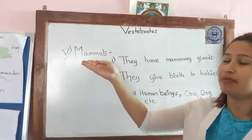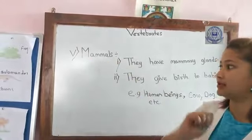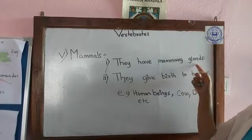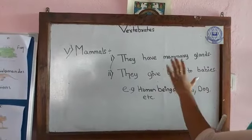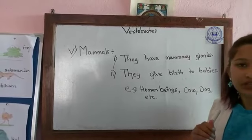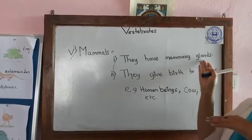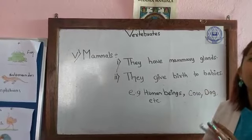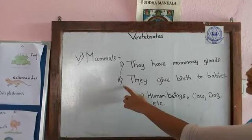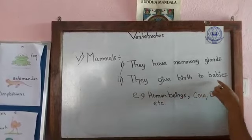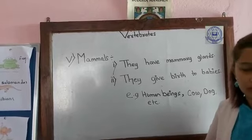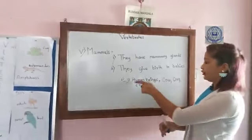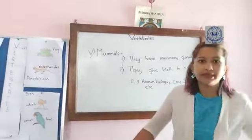The last class is Mammals. The first characteristic is they have mammary glands — this is present in the female, and it is a gland or organ that produces milk. The second characteristic is they give birth to babies; they do not lay eggs. Examples are human beings, cow, dog, etc.